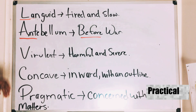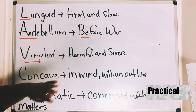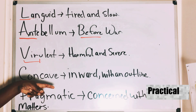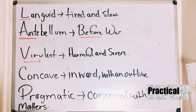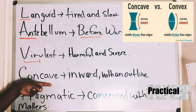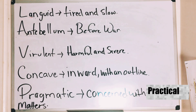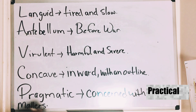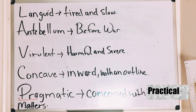For 'virulent,' I thought about how a virus is harmful and severe — like COVID-19. For 'concave,' I had trouble remembering it, so I Googled it: it means an inward curve or outline. I'll insert a picture there. Since I'm a visual learner, seeing a visual helped me remember the word. Creating visuals for yourself can help you remember words. For 'pragmatic,' it means concerned with practical matters — and 'pra' at the start reminded me of 'practical.'